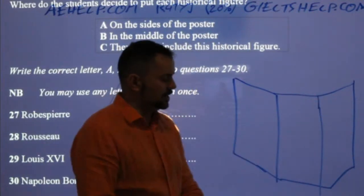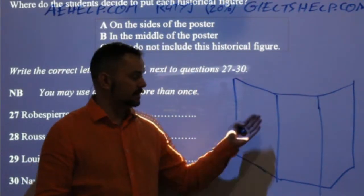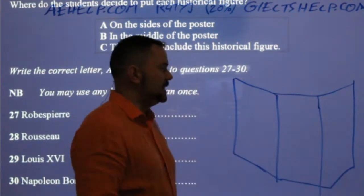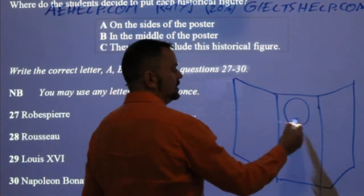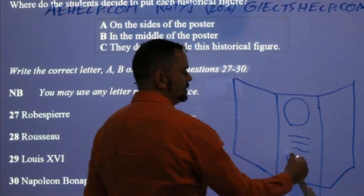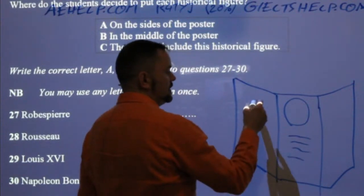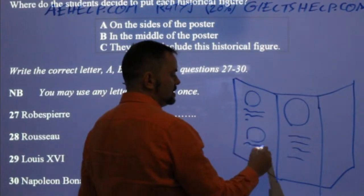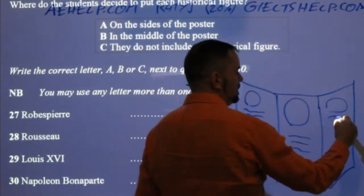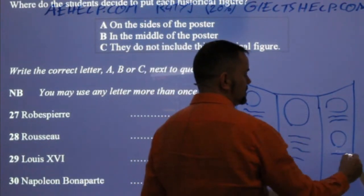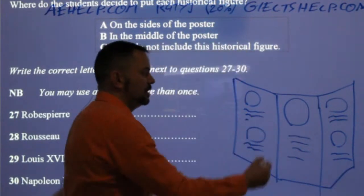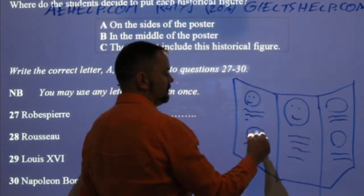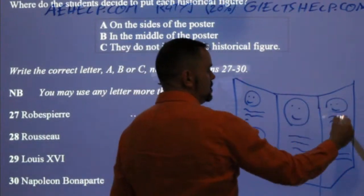They're doing a three-board poster — you have one side, the middle, and the other side. It's a big poster and somebody's standing beside it talking about the information. Here they discuss that they're going to have somebody in the middle who's very important, and then have one person on each side.